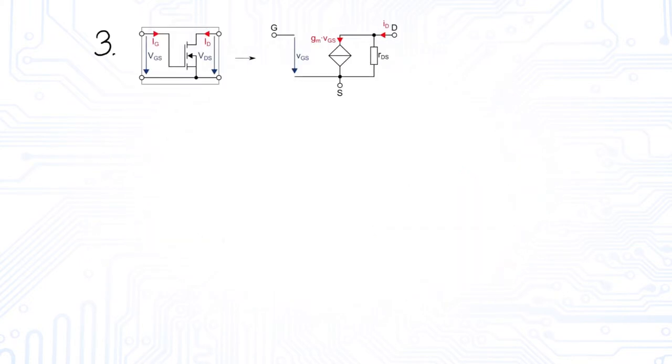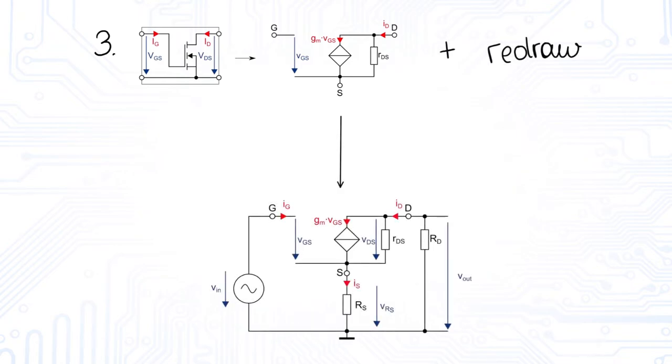Afterwards, we replace the transistor by its small signal representation and redraw the small signal equivalent circuit a little bit for a better overview. This is the resulting circuit.